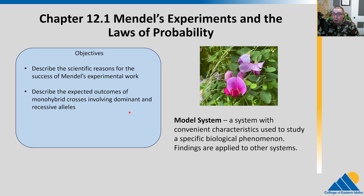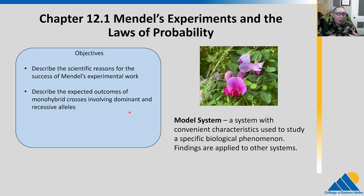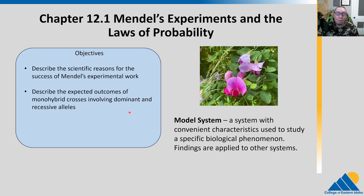We've talked several times in this course that we're really interested in humans — that makes sense, we are humans. We care about how humans reproduce and pass on traits and have disease and things like this. But humans, for various reasons, are not great systems to do experiments on. For Mendel, Mendel used pea plants. Pea plants are a great model system for genetics.